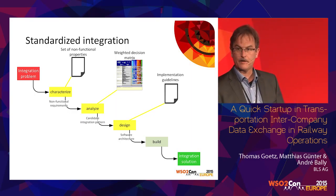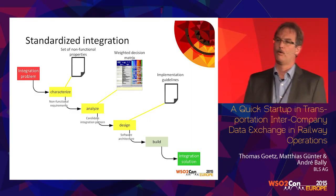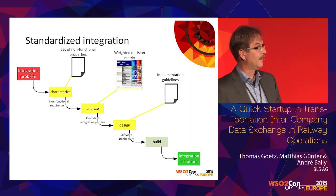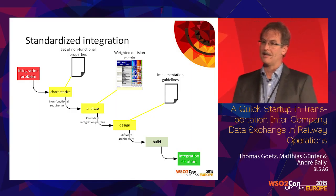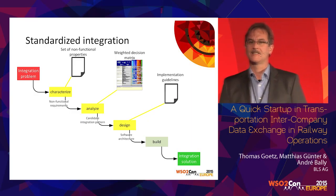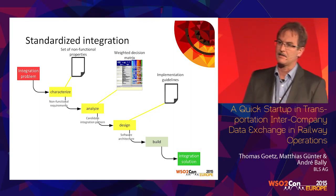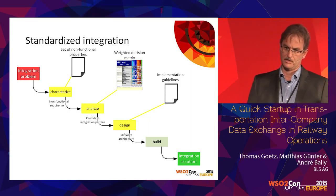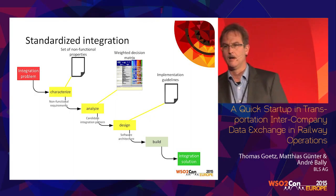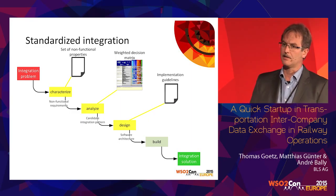So we devised three different tools. First, we developed a set of non-functional properties that are often relevant for describing integration problems. Second, we developed a decision matrix that delivers one or a few integration patterns as candidate solutions. Third, we described each of these patterns in implementation guides that describe, for example, which elements form this pattern, how they interact, what middleware is available in our company, what the principles and regulations are, and what the options and trade-offs are when implementing this pattern.